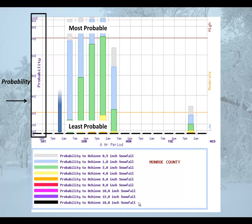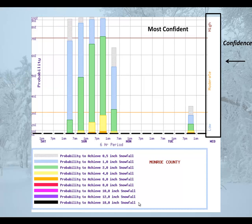Another way to think about probability is confidence, or how confident we are that a snowfall amount will be achieved. Our most confident forecast and our highest probability forecast is found toward the top portion of this graphic.